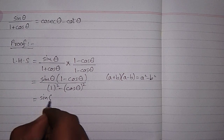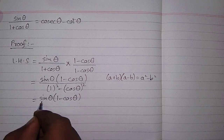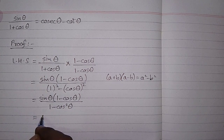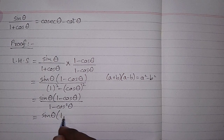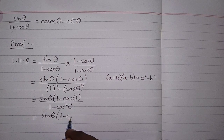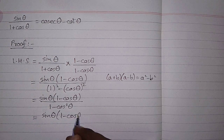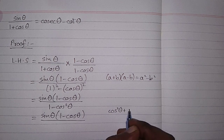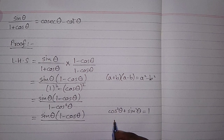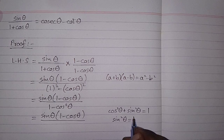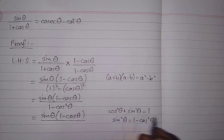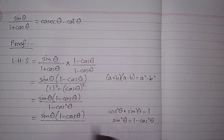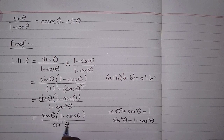Now we have sin theta multiplied by 1 minus cos theta upon 1 minus cos squared theta. We can use the trigonometric identity cos squared theta plus sin squared theta equals 1, which can be rewritten as sin squared theta equals 1 minus cos squared theta. So we substitute sin squared theta in place of 1 minus cos squared theta in the denominator.